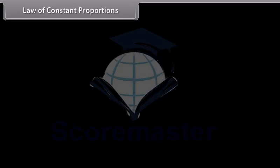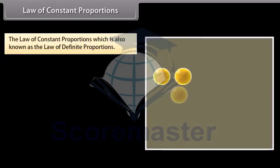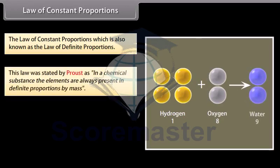Law of constant proportions. The law of constant proportions which is also known as the law of definite proportions. This law was stated by Proust. In a chemical substance, the elements are always present in definite proportions by mass.